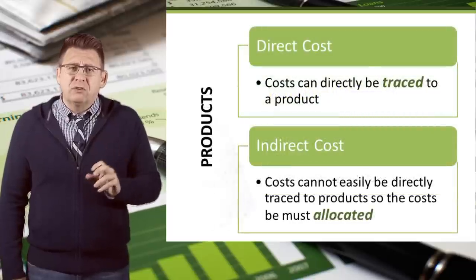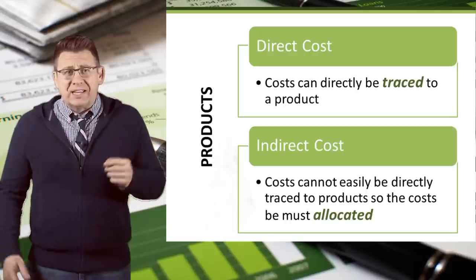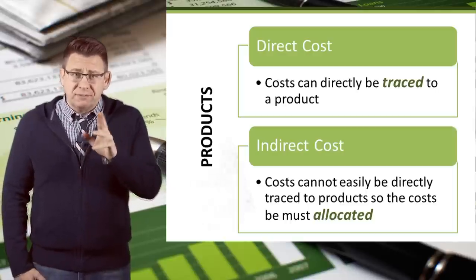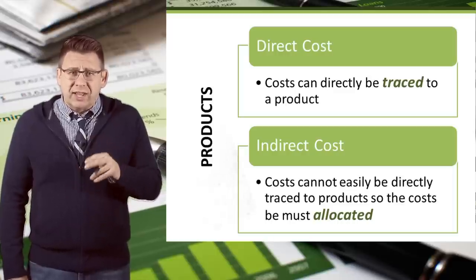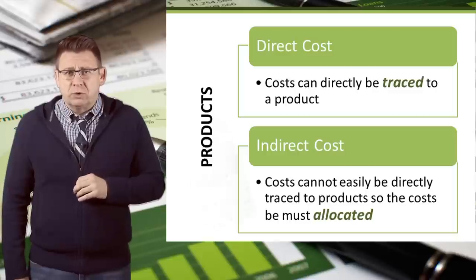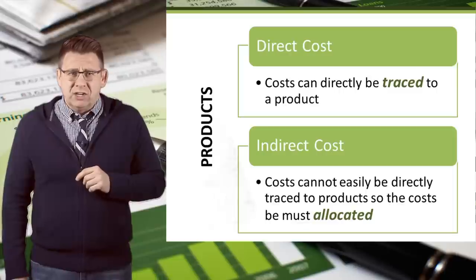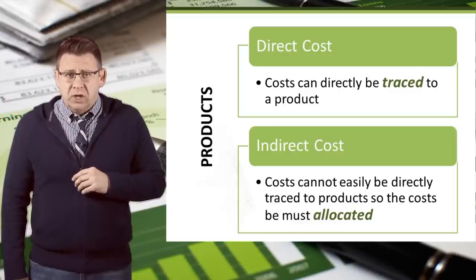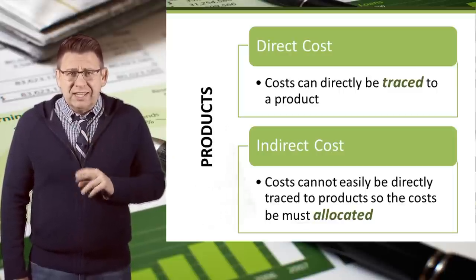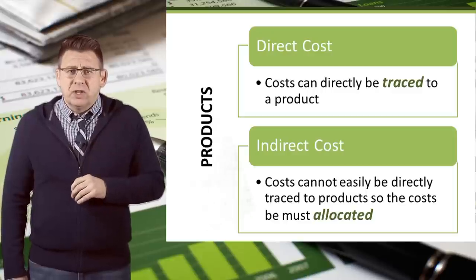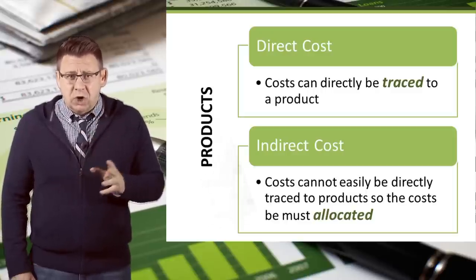Direct costs are those that can be easily traced to a product. A car has four tires, so the cost of four tires is easily traced to a car. Indirect costs cannot easily be traced to a product. Because of this, we allocate indirect costs to products. Depreciation expense on a production facility isn't easily traceable to each finished good, so it is allocated to all of them.